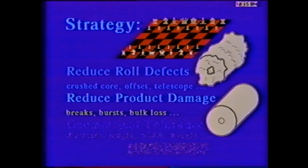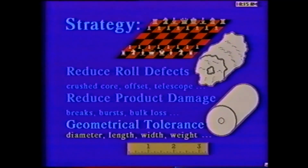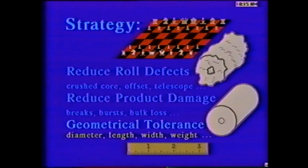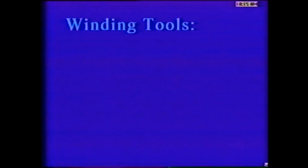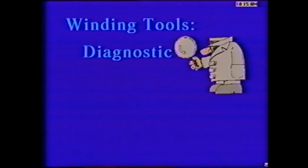The goal is to wind a cylindrical roll to a specified length, diameter, and width. The wind must be sufficiently hard to withstand subsequent loads during transport and handling, but not so hard as to damage the material. While there are many tools available for the design of wound rolls, they may be classified in three broad categories. The first, and most commonly used, is the subjective diagnosis of problems and solutions using previous experience or trial and error.